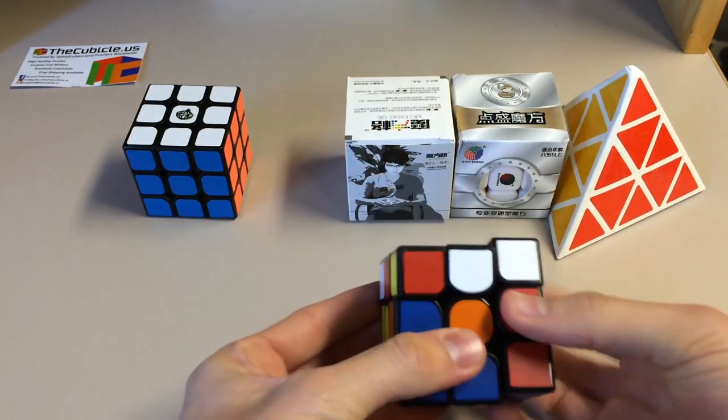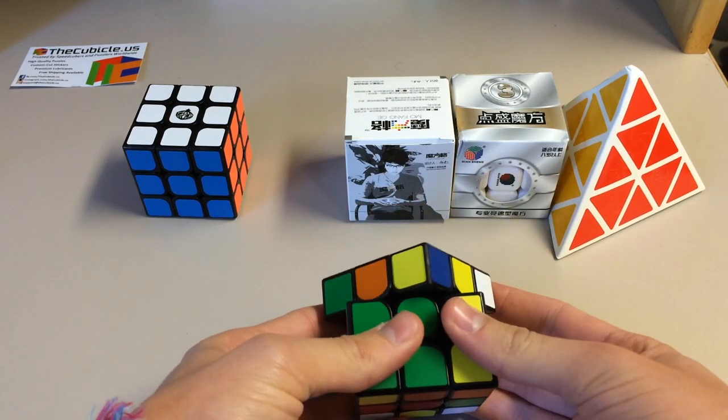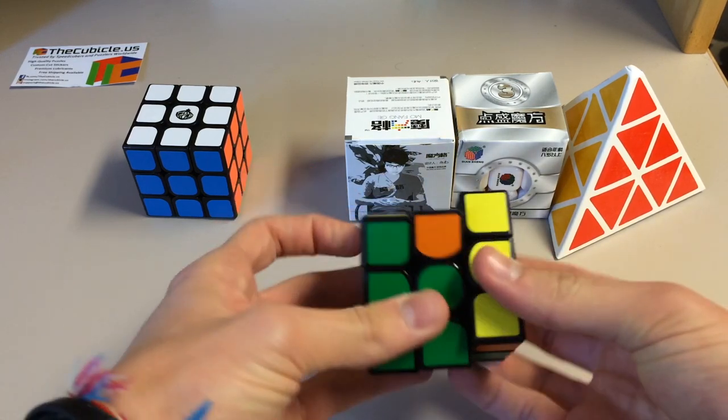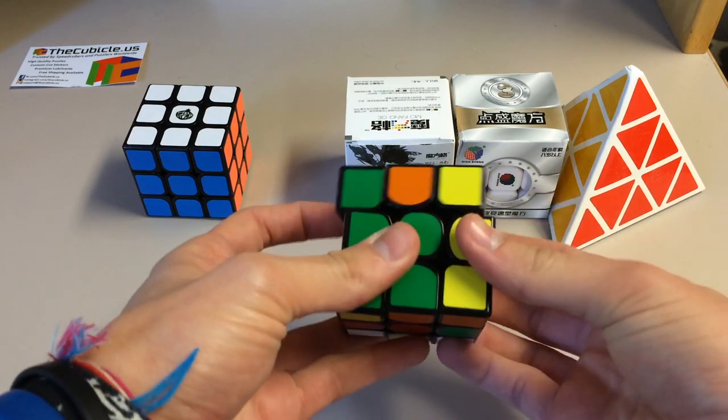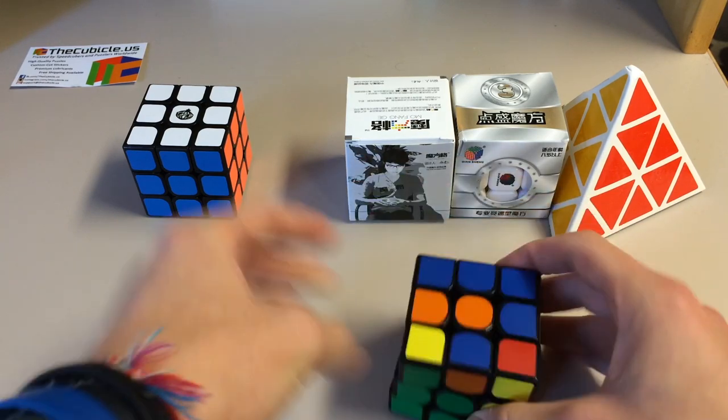It feels very similar to the 4x4, in my opinion. It's a great 3x3. Let's go ahead and look at corner cutting on it. This is straight out of the box. That is some pretty good corner cutting. Reverse is nice. Line to line reverse. That is amazing.